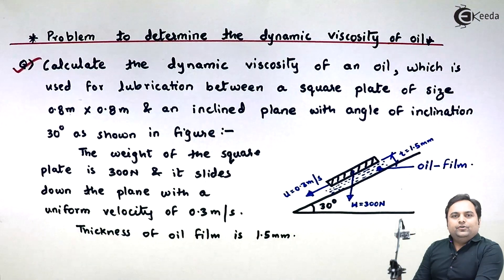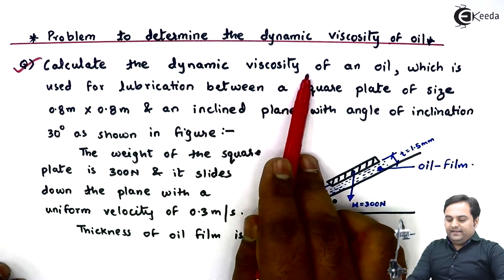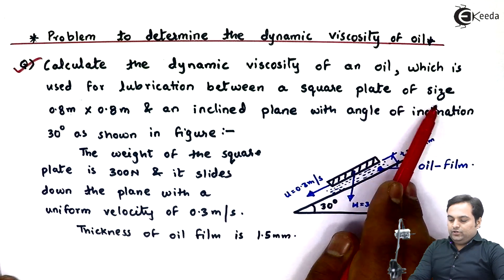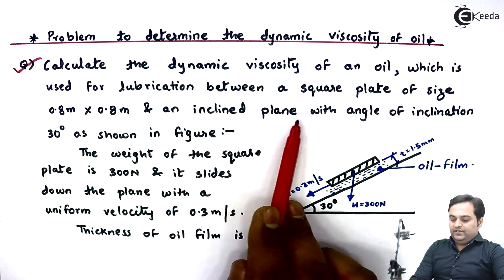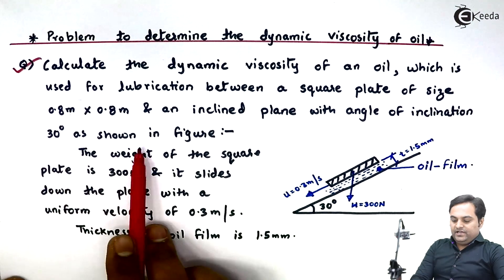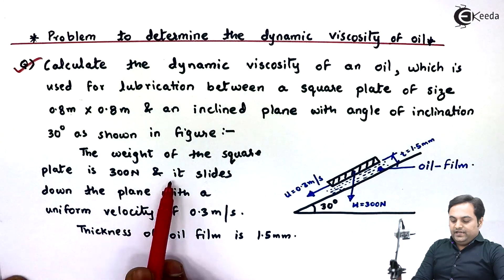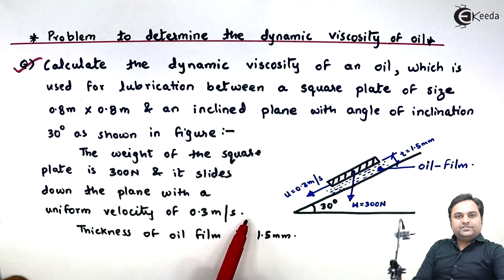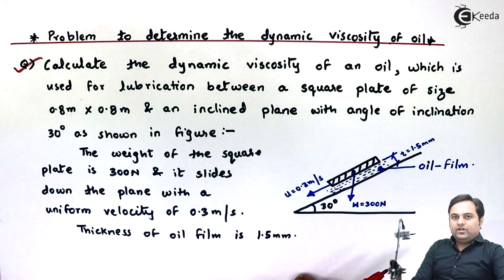Hello friends, in this video we will see a problem related to dynamic viscosity of oil. The question is: calculate the dynamic viscosity of an oil used for lubrication between a square plate of size 0.8 m × 0.8 m and an inclined plane with angle of inclination 30 degrees. The weight of the square plate is 300 Newton, it slides down the plane with a uniform velocity of 0.3 m/s, and the thickness of the oil film is 1.5 mm.